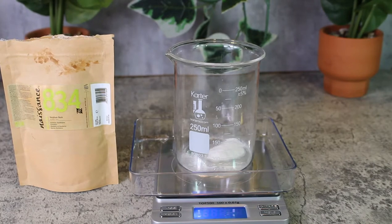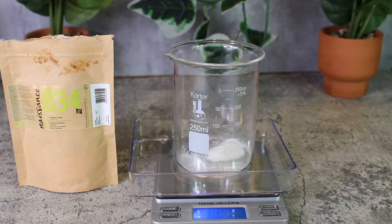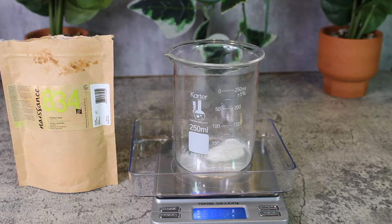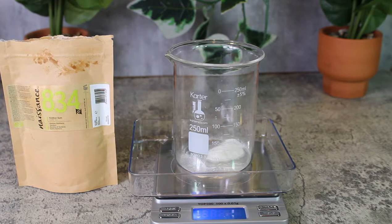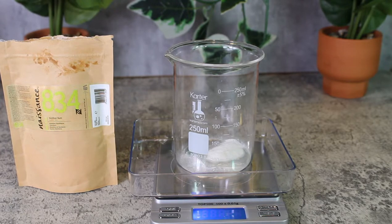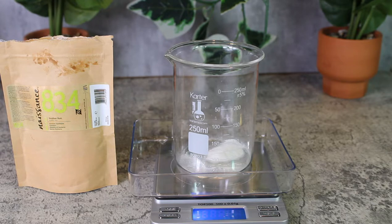I totally forgot to even record me weighing out the xanthan gum, but the xanthan gum is going to serve as a thickener slash gelling agent. You're gonna see later on in the video the product gets a little jelly. That's where we get the thickening and the gelling agent from the xanthan gum. I'm mixing it in the glycerin just so it can help distribute the ingredients into the water phase.